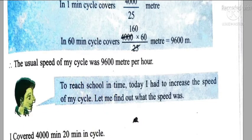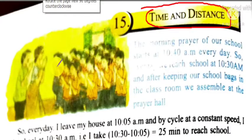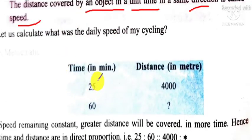And we can easily solve the given problems of this chapter by using the unitary method like this. For example, if 25 minutes are required for 4000 meters, then what distance will be covered in 60 minutes or one hour?